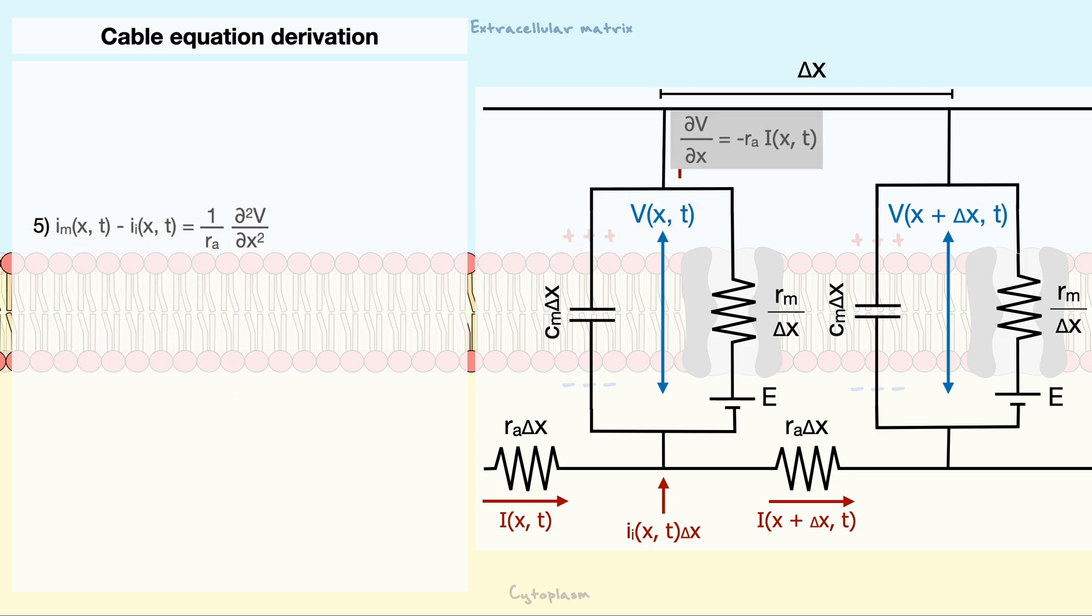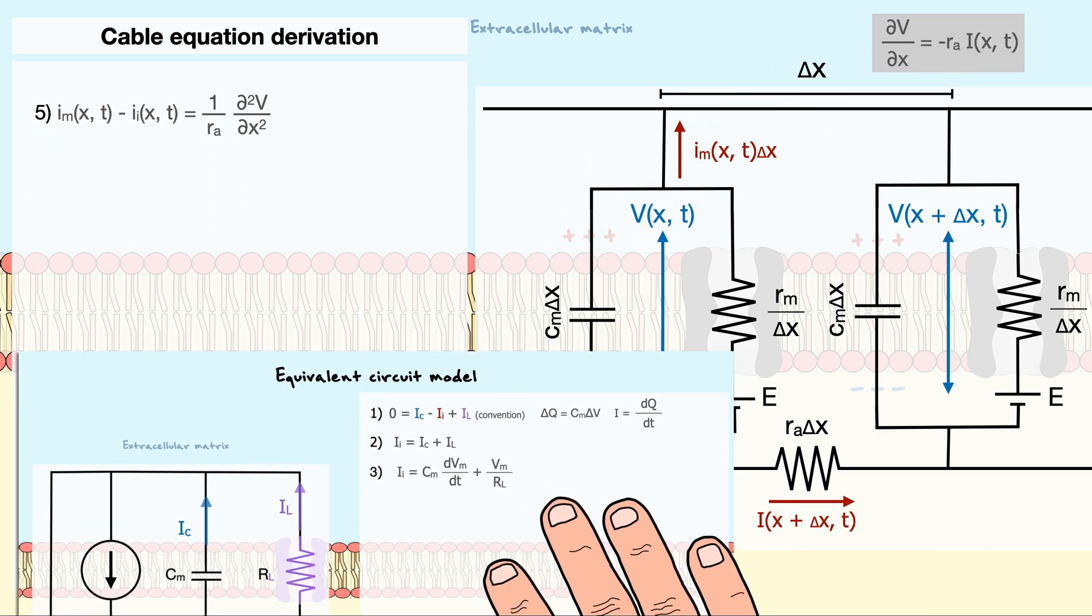we can replace the partial derivative of current to get this new expression. Remember from our discussion on the equivalent circuit model that the current going through this parallel system of a capacitor and a resistor is simply equal to the capacitive and resistive current, which are expressions we have already found.